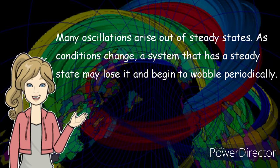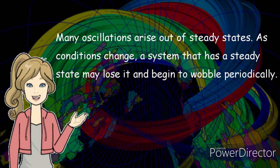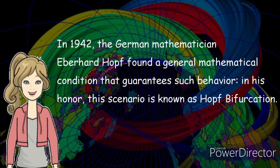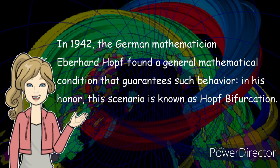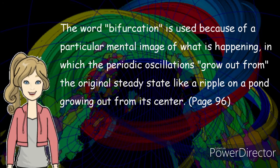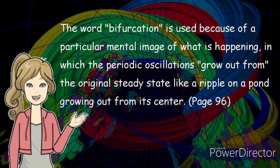Many oscillations arise out of steady states — as conditions change, a system that has a steady state may begin to wobble periodically. In 1942, the German mathematician Eberhard Hopf found a general mathematical condition that guarantees such behavior. In his honor, this scenario is known as Hopf bifurcation. The word bifurcation is used because of a particular mental image of what is happening, in which the periodic oscillations grow out from the original steady state like a ripple on a pond growing outward from its center.